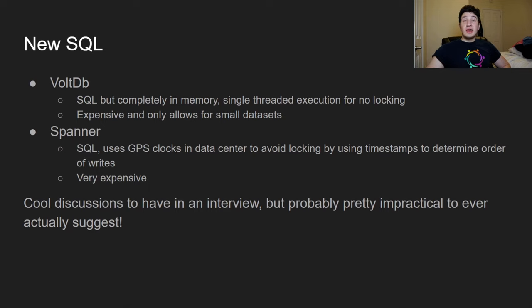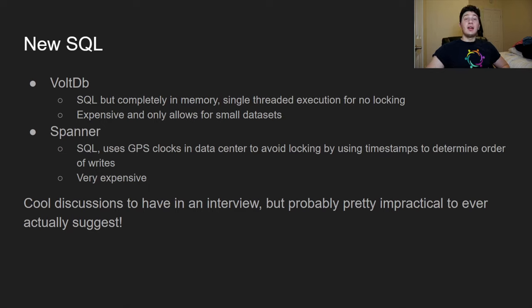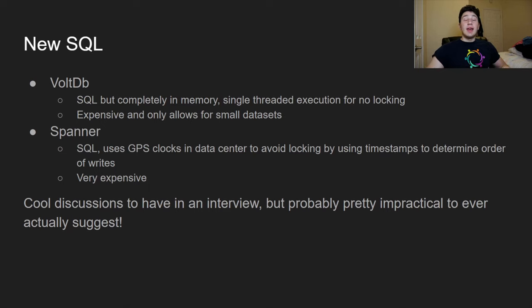As honorable mentions — probably won't come up much in interviews — first is VoltDB, a NewSQL database. NewSQL means it's SQL but implemented in interesting ways for better performance. VoltDB runs entirely in memory and uses only a single CPU thread, which means there literally cannot be any race conditions since there are no concurrent operations. By running everything in memory, operations happen fast enough that single-threaded execution is actually feasible for performance.